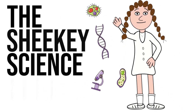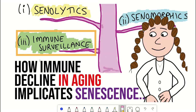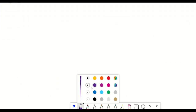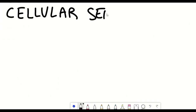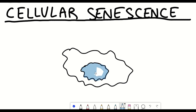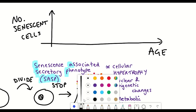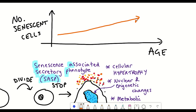Hello and welcome to the Shiki Science Show, where today we are back with another senescence video. Senescent cells — cells that stop dividing and secrete a bunch of inflammatory factors — increase in number with age.